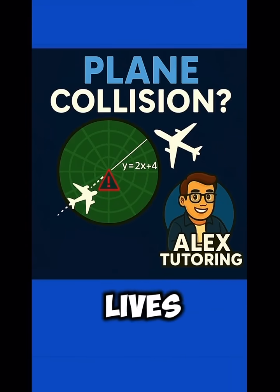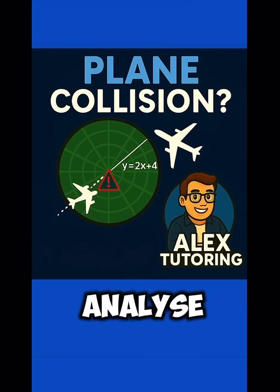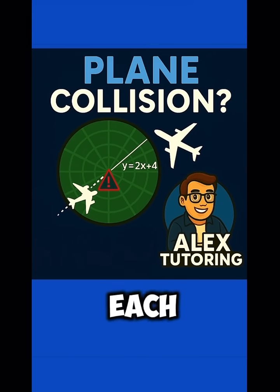This maths problem could literally save lives. If there were two planes in the air and they're on a trajectory and they might collide, how would you analyse this and check if they're not going to hit each other?